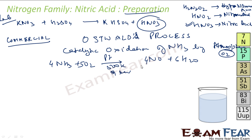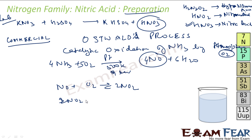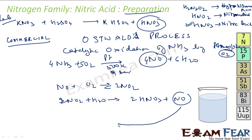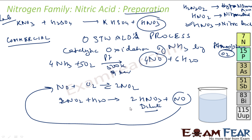Once we have NO, it reacts again with oxygen to form NO₂. This NO₂ then has water added to it to form nitric acid, along with NO again. This NO is recycled to form more NO₂ and then more nitric acid. The resulting nitric acid is very dilute because of the water present, but you can concentrate it by distillation.